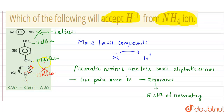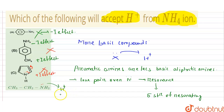Among options B and D, option B is the wrong answer because both minus I effect and plus I effect groups are present in the structure. In option D, however, there is a lone pair over the nitrogen which can be donated to the H+, to accept the H+ from NH4+ ion. Hence the fourth option is the right answer. This lone pair also does not take part in resonance because it is an aliphatic amine. So the fourth option is the correct answer.